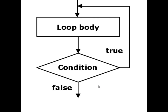Now you see in the flowchart for the do-while loop statements. The first step: we execute the loop body. The next step: we check the condition. If the condition is true, we do the loop body again; otherwise, we do the next statements.